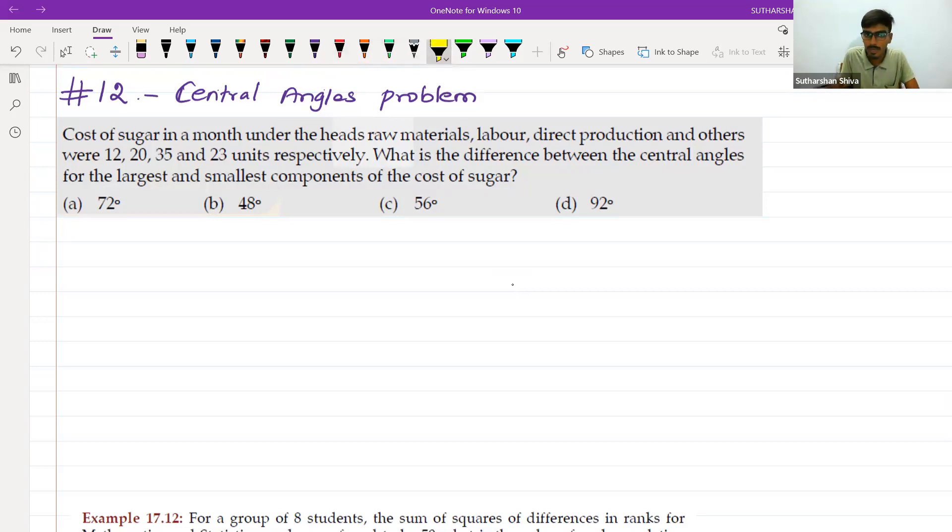What is the question we will try to understand? A cost of sugar in a month under the heads of raw materials, labor, direct production, and others were 12, 20, 35, and 23 units, respectively. What is the difference between the central angle for the largest and the smallest component of the cost of sugar?